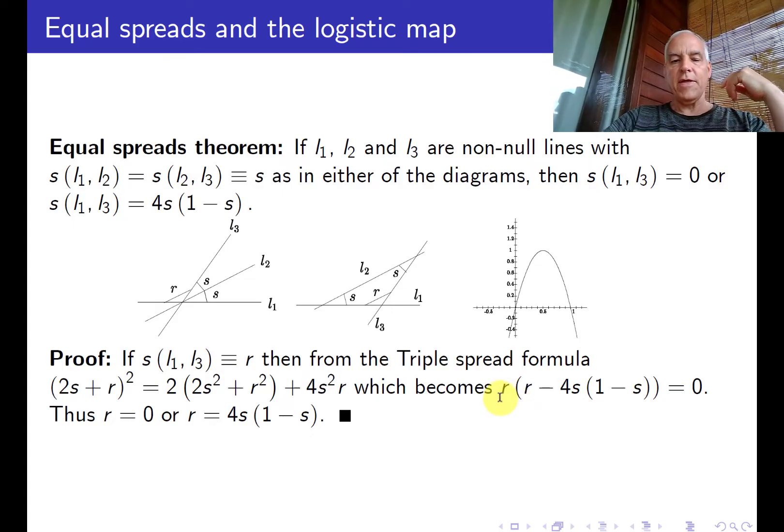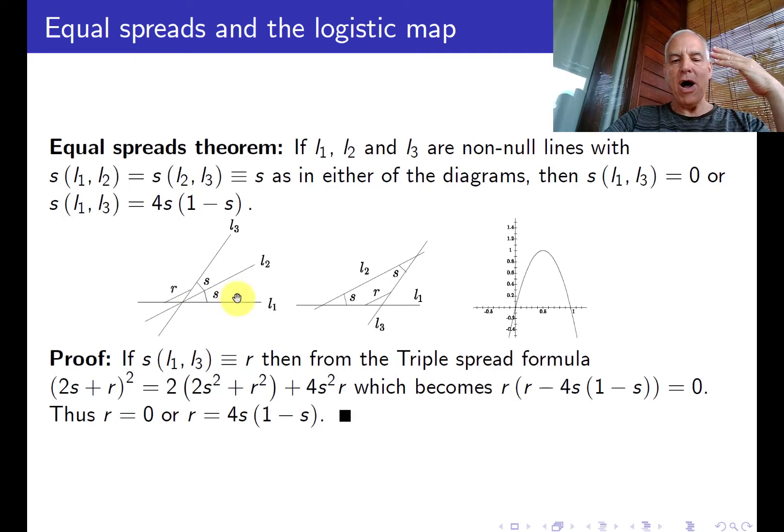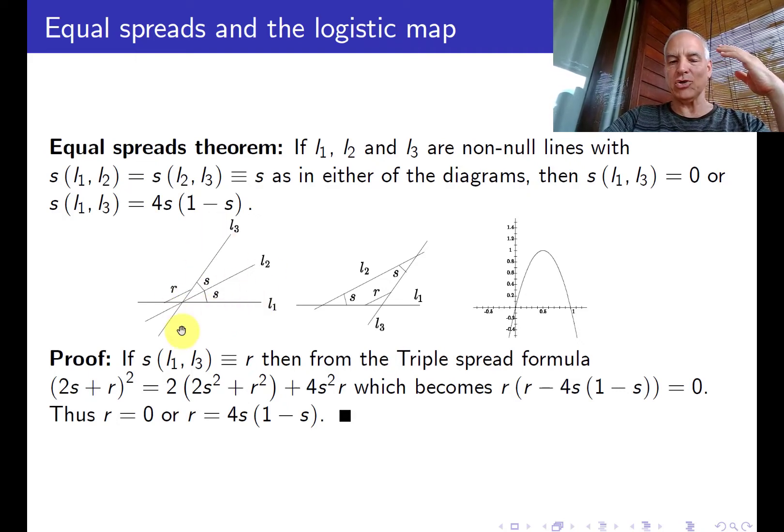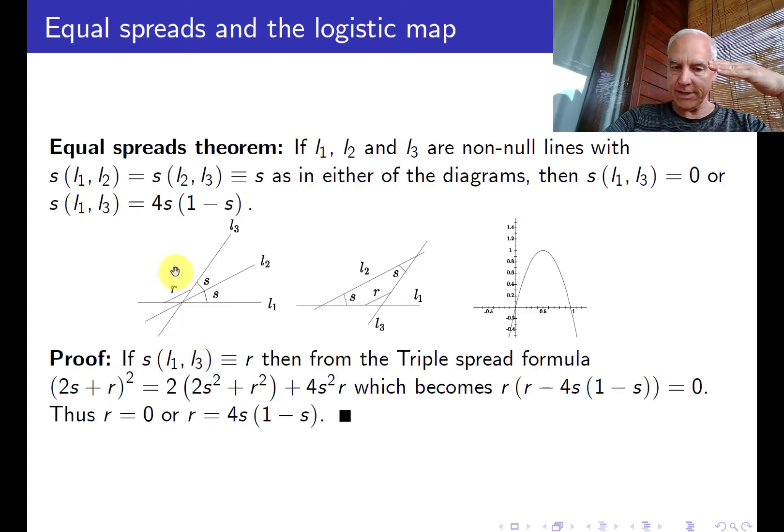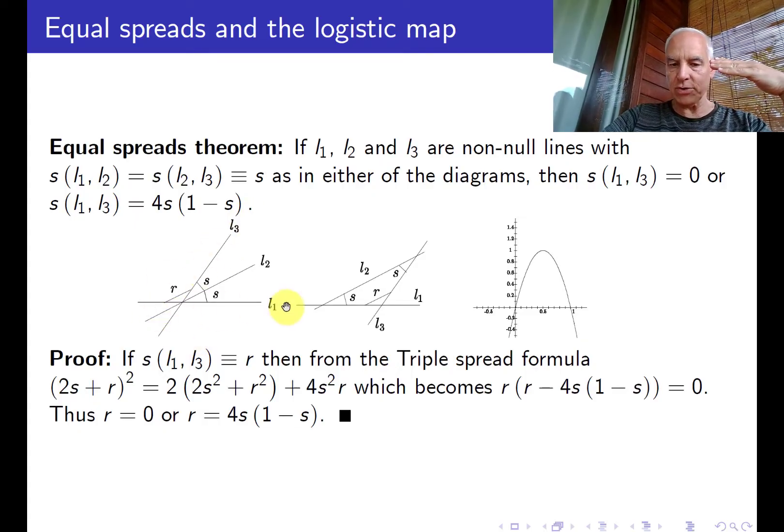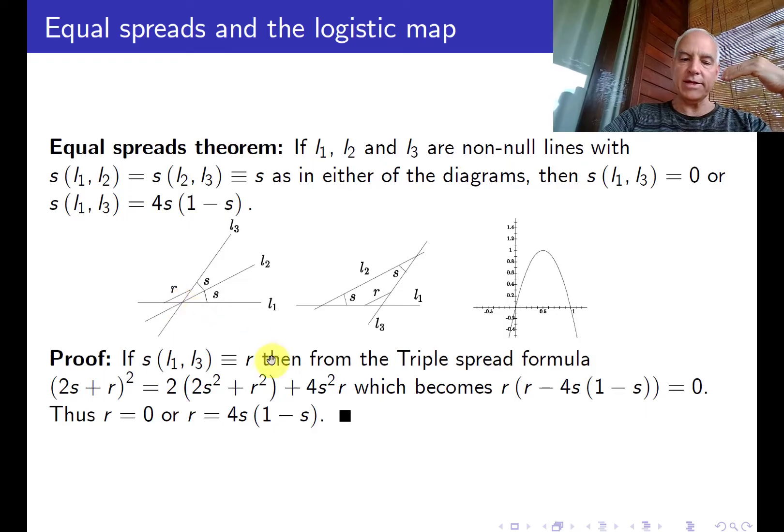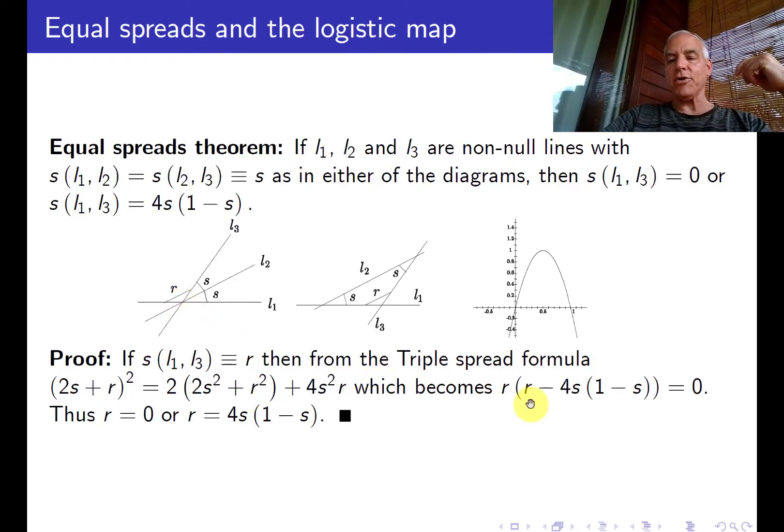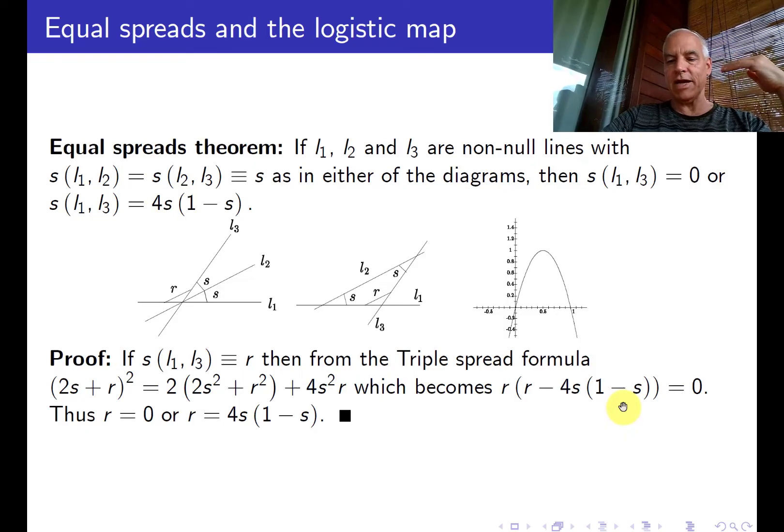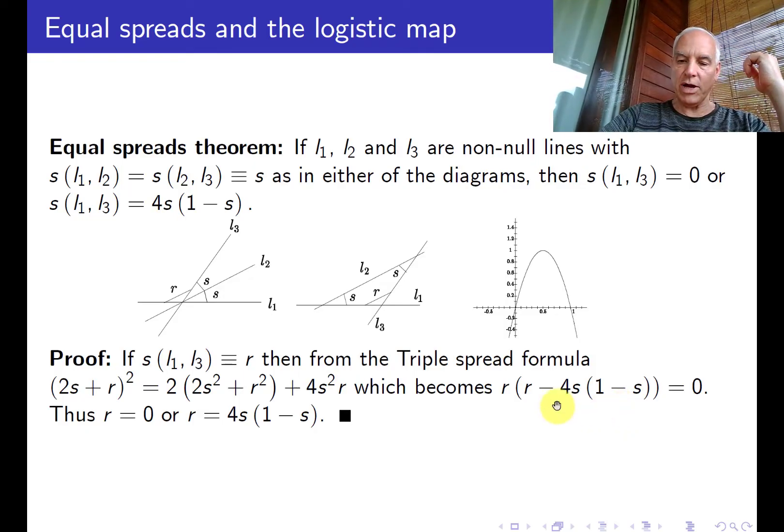The solution R equals 0 is kind of obvious. That is one possibility in this diagram is for L1 and L3 to actually coincide. If we move L3 so it's coinciding with L1 then that will satisfy the conditions. So that's an automatic solution, and since it's a quadratic equation in R, the other solution is R equals 4S(1-S).